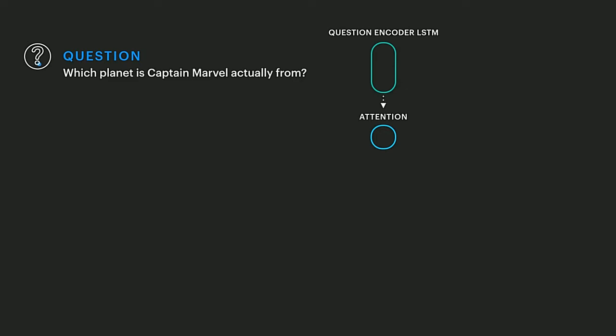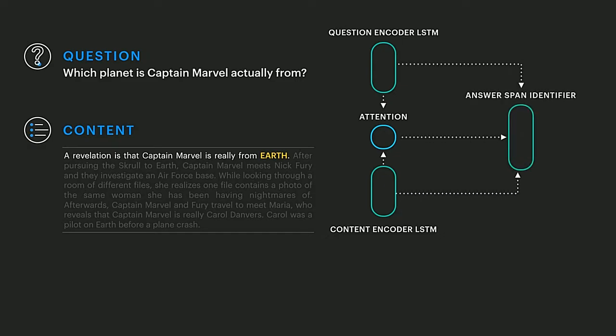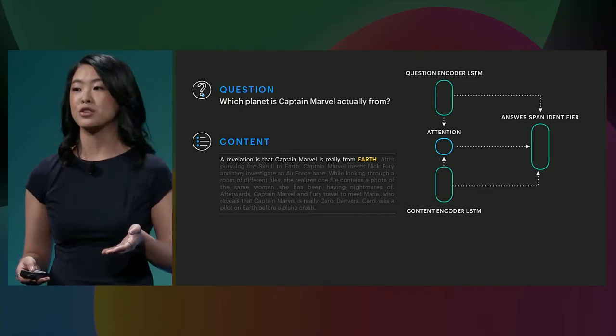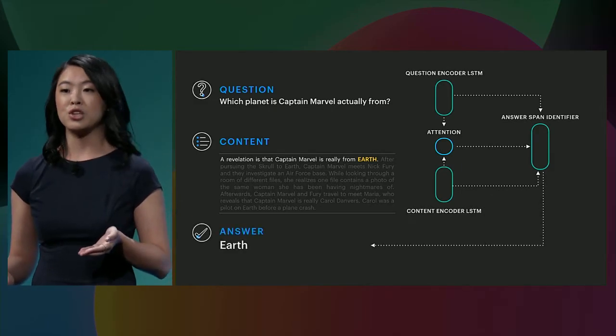Concretely, how do models like this work? First, the text of the question is passed to a neural network module called a question encoder — in this case, an LSTM. Similarly, the content paragraph is given to a content encoder. These two neural networks interact through an attention mechanism. The goal of the attention mechanism is to leverage the question to find which words in the content paragraph could provide the answer. Subsequently, the question, the attention, and the content paragraph outputs are passed to a third neural network module, which identifies the answer span — essentially which words in the content paragraph correctly produce the answer, which in this case is 'Earth.'